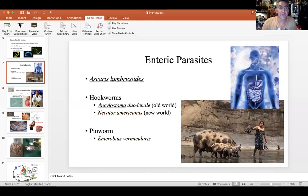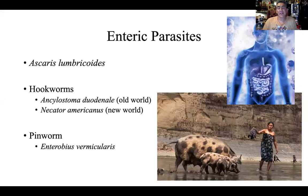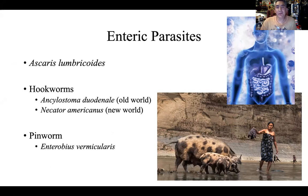Back to continue with our nematodes. We know that this group is a very ubiquitous, very successful, very abundant phylum with a lot of different species and a lot of ecology associated with them. We're going to focus primarily now on what we call enteric parasites. These are the better known, more familiar type of species because they directly affect humans — they are parasites in our intestinal tracts.